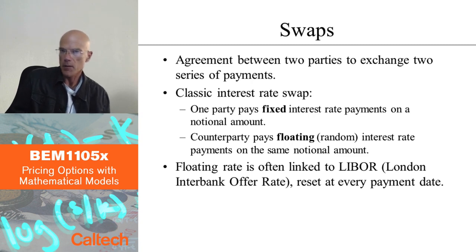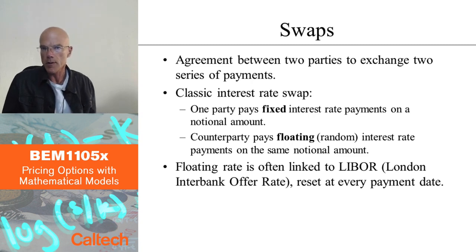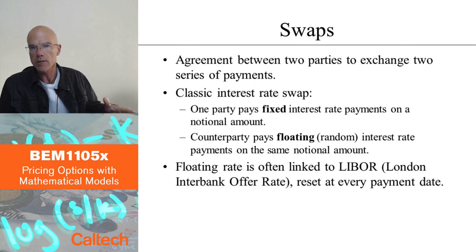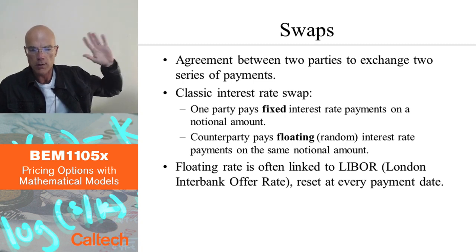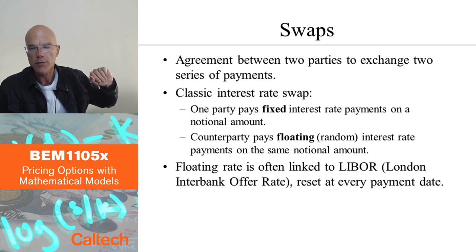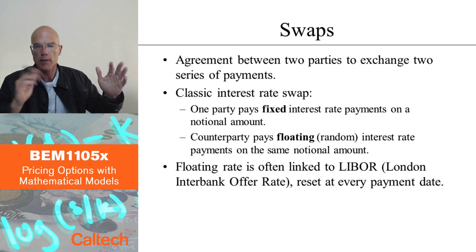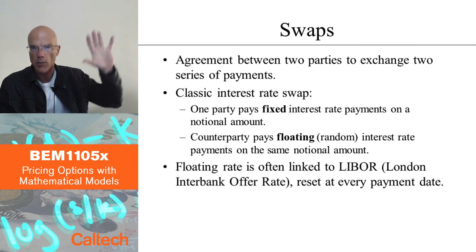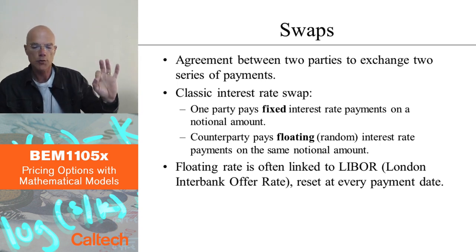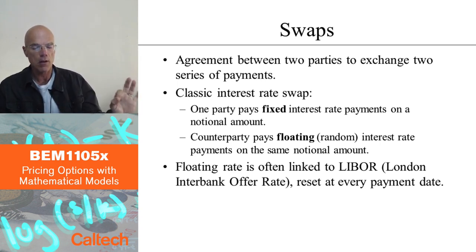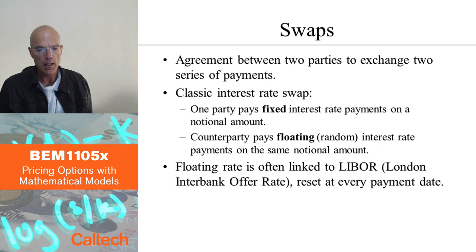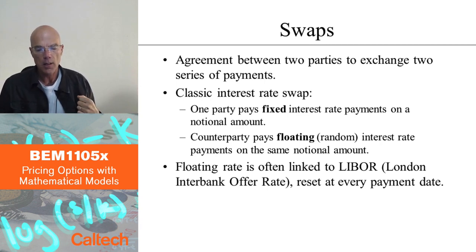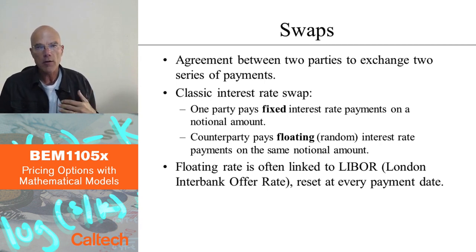The fixed amounts are typically computed as interest on some notional amount, say a million dollars, which is never exchanged — it's just an amount used to compute the interest on. The other party pays to the first party random interest on the same amount.